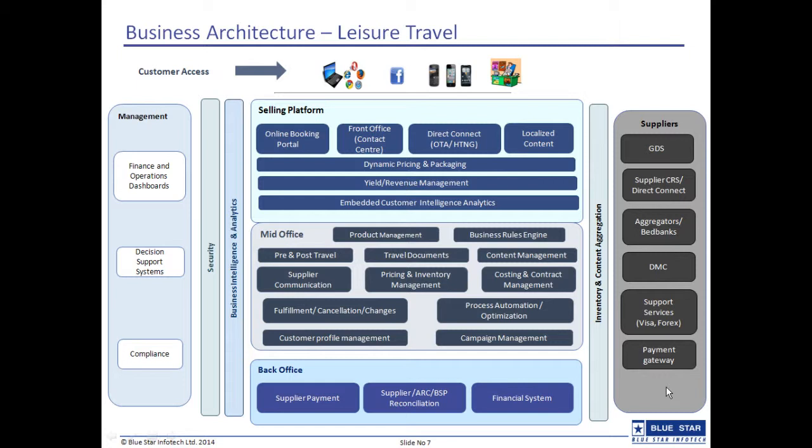On the left is the management layer that consists of a finance and operations dashboard, along with decision support systems and compliance. In the middle are multiple layers. The selling platform consists of an online booking portal, dynamic pricing and packaging, front office and revenue management. Below it is the mid-office layer which consists of product management, business rule engine, operations, costing and contracting, pricing and inventory, fulfillment, cancellations and amendments.